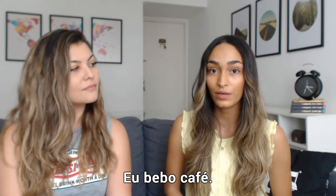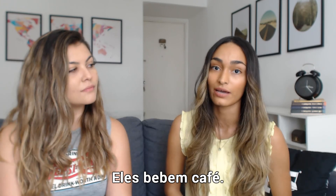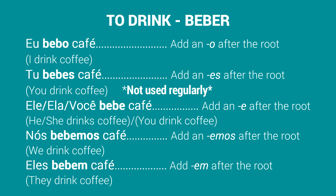Another example is the verb to drink — Beber. I drink coffee: Eu bebo café. She drinks coffee: Ela bebe café. We drink coffee: Nós bebemos café. They drink coffee: Eles bebem café. As you can see, the same rules apply for these two ER verbs.